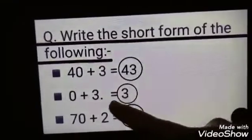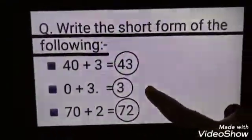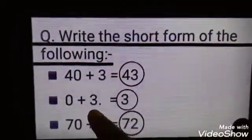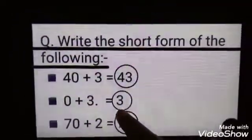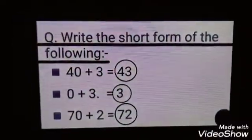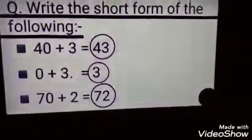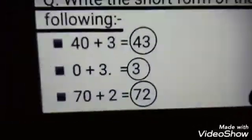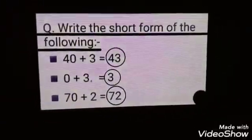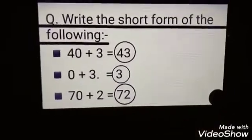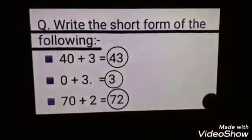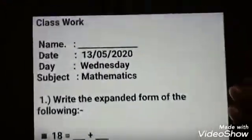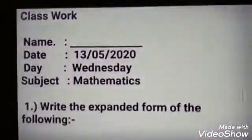Now 0 plus 3 equals 3. Here 0 is at tens place and 3 is at ones place, but there is no value of 0, so the answer will be 3. Similarly, 70 plus 2 equals 72. So now students, this is your classwork — everyone will do it in the copy.